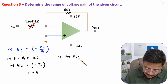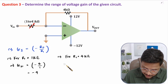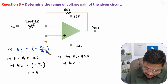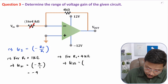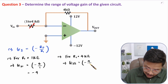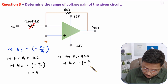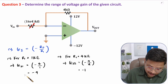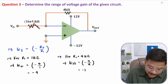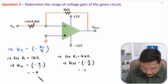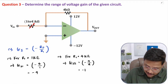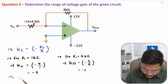For R1 equals 4 kilo ohm, gain G2 is minus RF by R1 — RF is 4 and R1 is also 4 — so gain will be minus 1. Therefore, gain will vary in between minus 4 to minus 1.